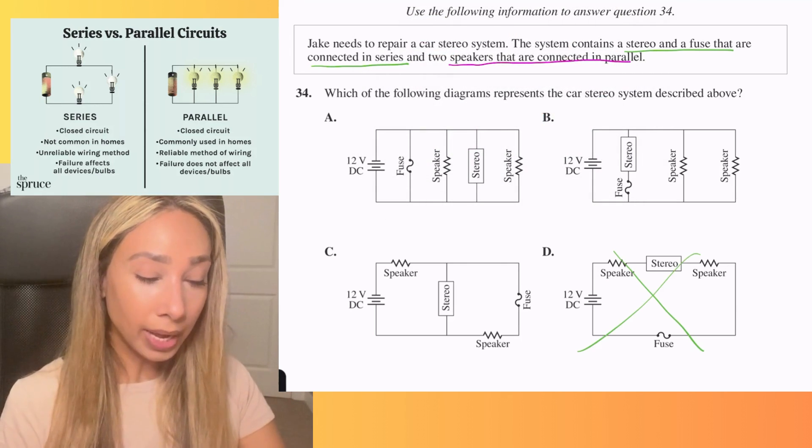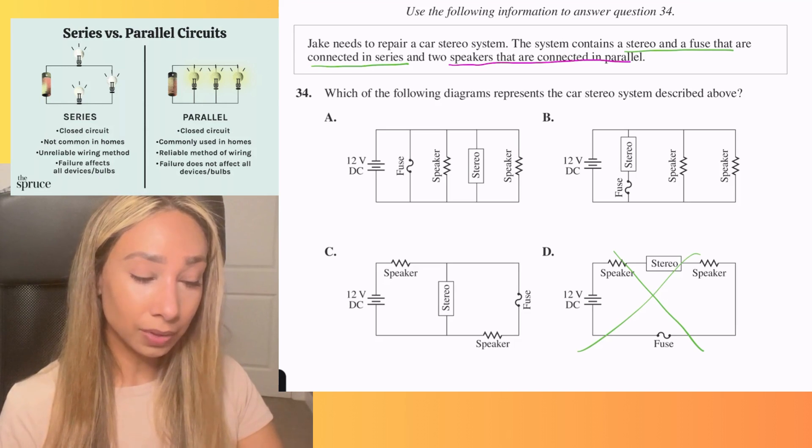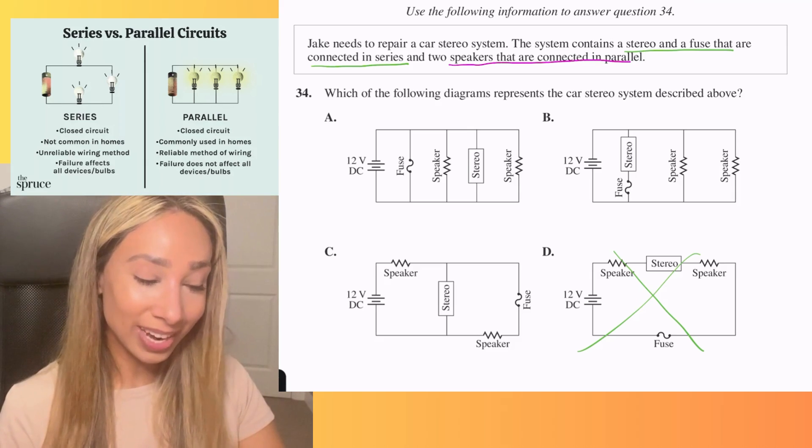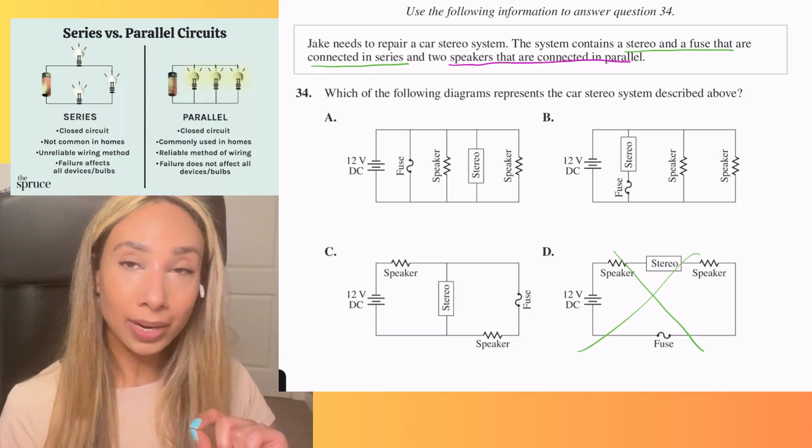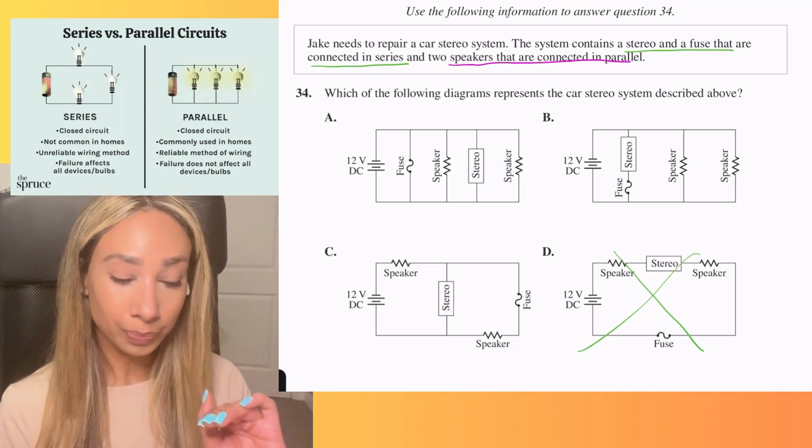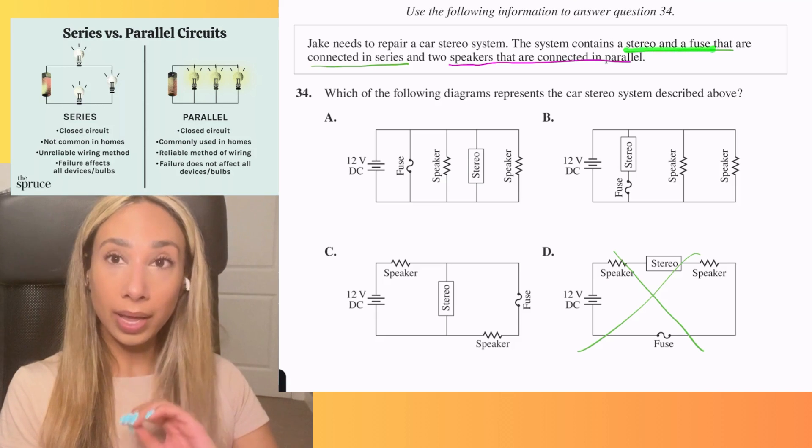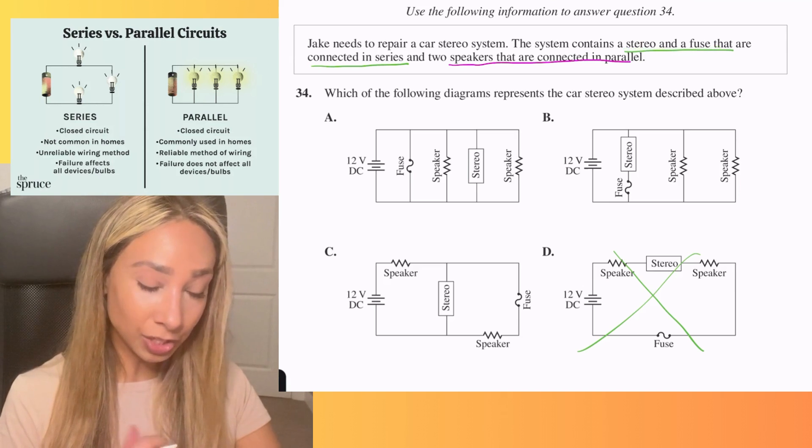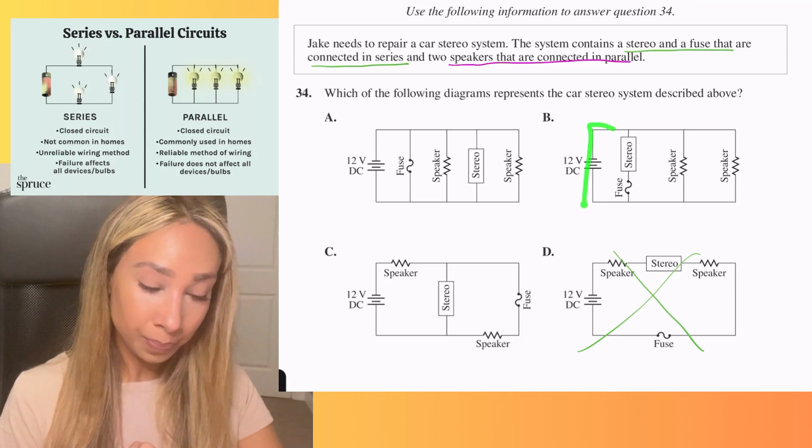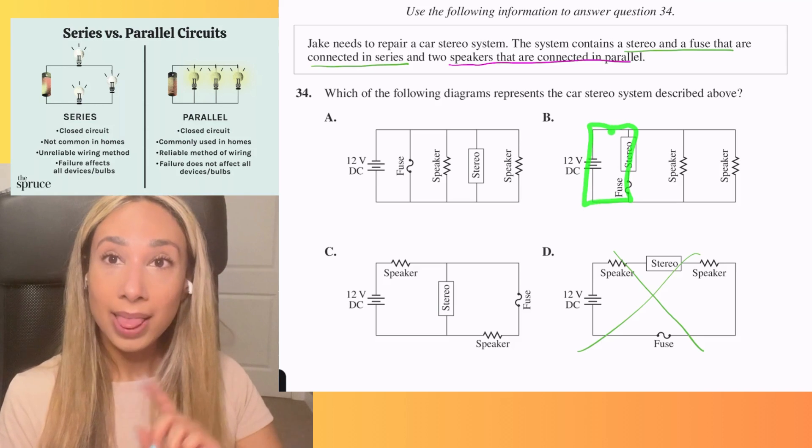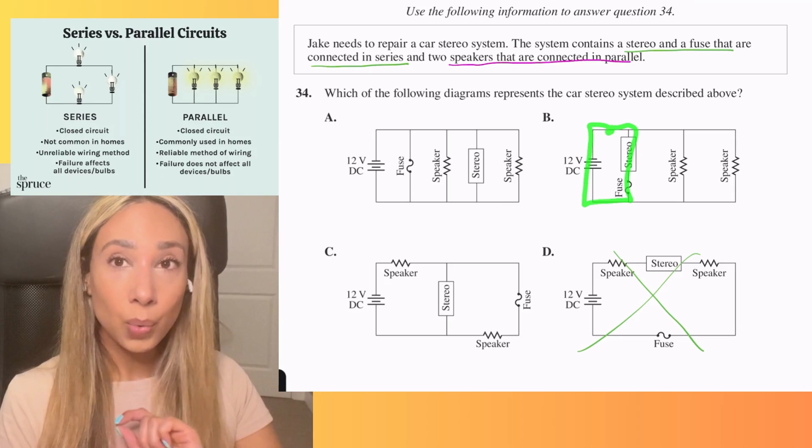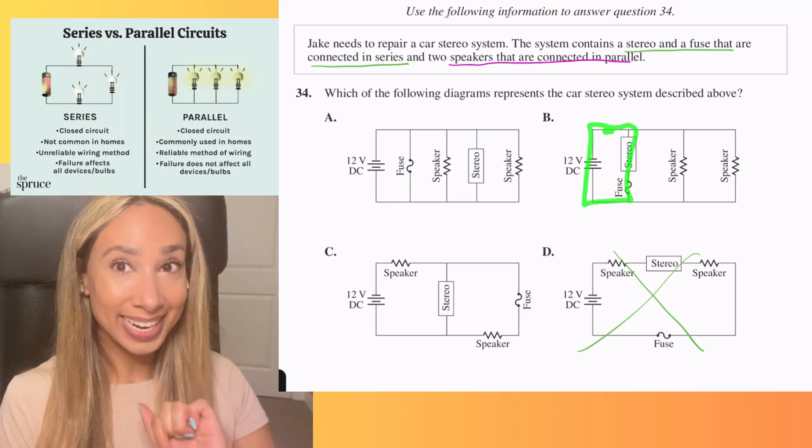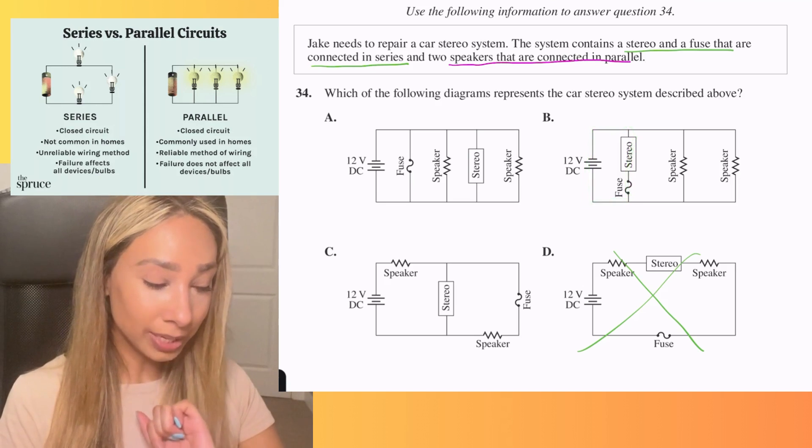Now, if we're looking at the fact that the stereo system has a fuse and the system has a stereo and a fuse that are connected in series, we need an option where we have one loop that just contains the stereo and the fuse. So the only one that I'm looking at that actually fits that is option B. As I trace that out, that is one loop in a series circuit where the fuse and the stereo are connected together.